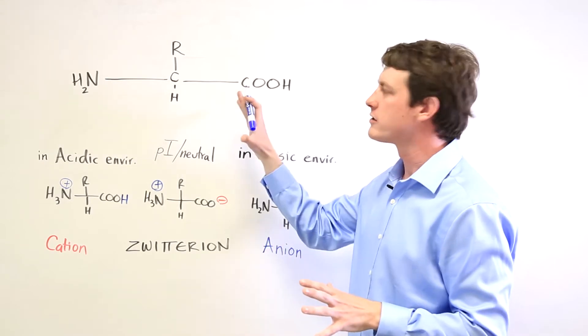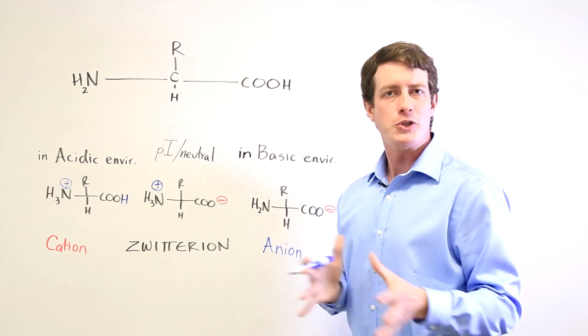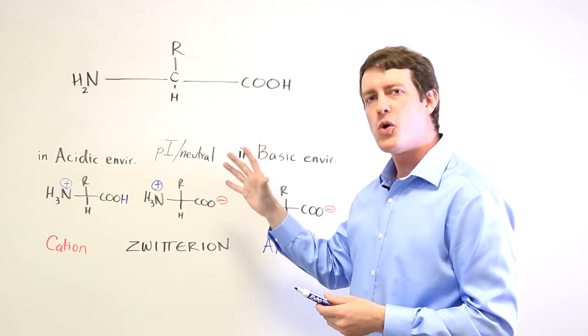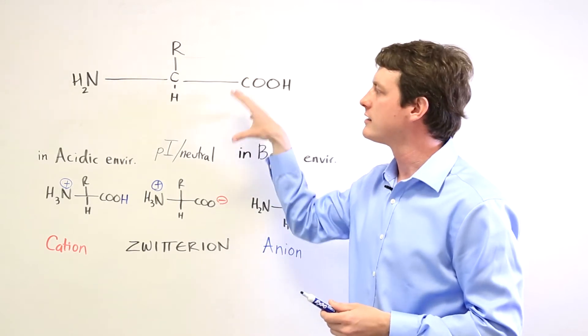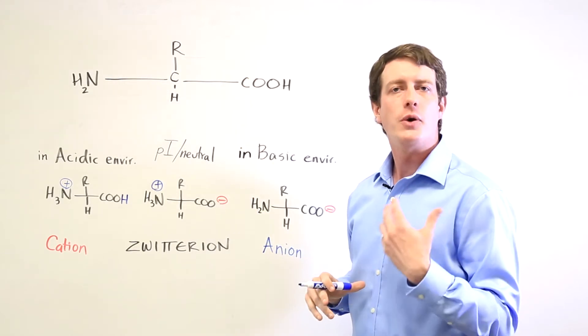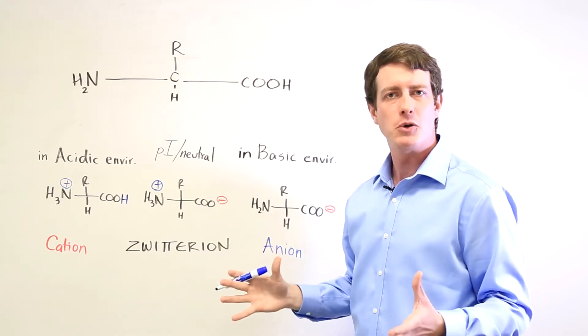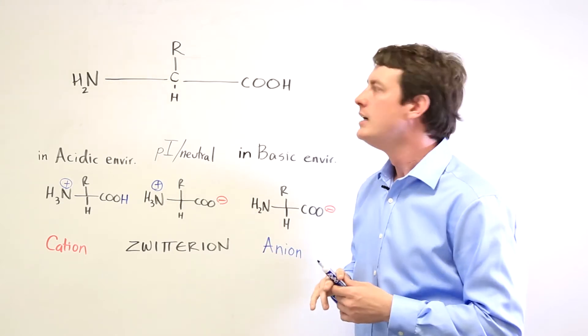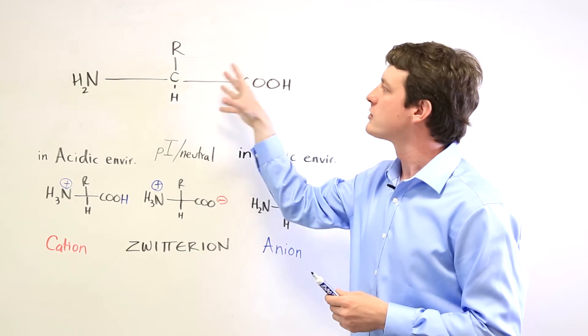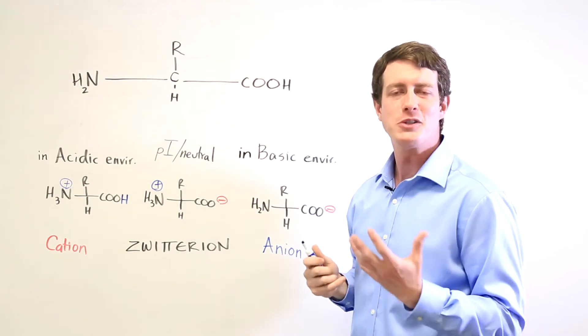Now you don't need to be able to look at the structure and determine whether it's an L or D amino acid. Just know that all of the amino acids that we encounter in nature are going to be L amino acids. Those are the ones that form the proteins that we use in the human body and we don't have to analyze the structure of these in order to figure out how it rotates that light.